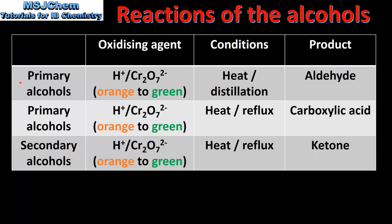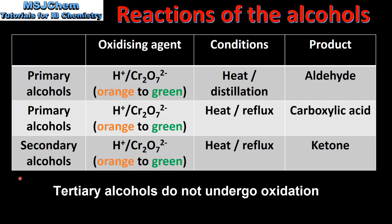So let's end with a summary. Primary alcohols can be oxidized to form aldehydes or carboxylic acids depending on the conditions used. To obtain the aldehyde it's heat with distillation. To obtain the carboxylic acid it's heat under reflux. The oxidizing agent is the same for both reactions, as is the color change orange to green. Secondary alcohols can be oxidized to form ketones; the reaction conditions are heat under reflux. The oxidizing agent is acidified potassium dichromate, which changes color from orange to green. And tertiary alcohols do not undergo oxidation.